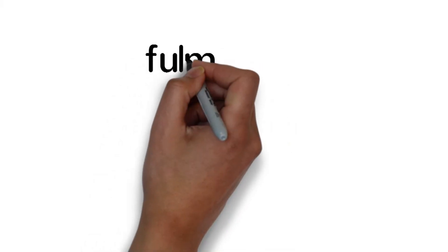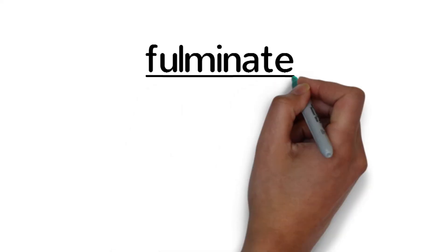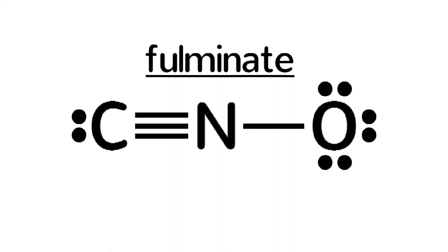Fulminated mercury is a compound of mercury-2 and the polyatomic ion fulminate, which has the following structure. Before I tell you the formal charge of every atom, pause the video and try to figure it out for yourself.